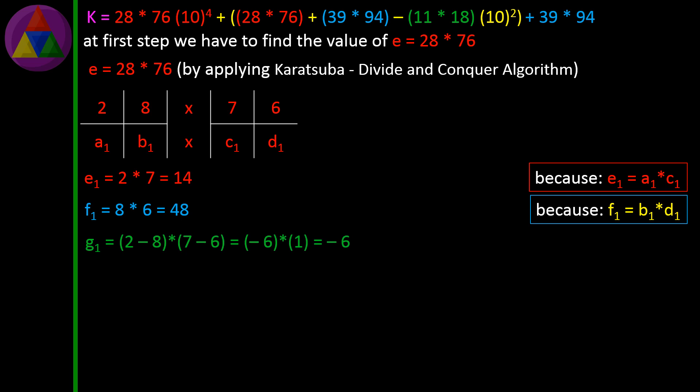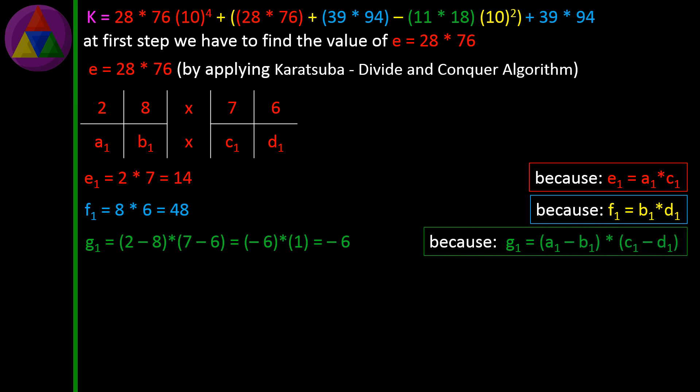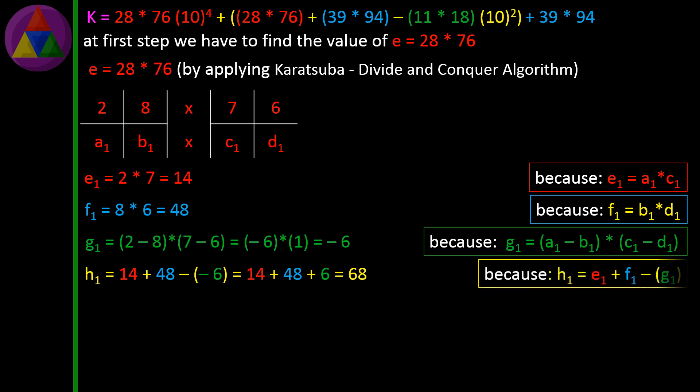G1 = (2−8) × (7−6) = (−6) × 1 = −6, because G1 = (A1−B1) × (C1−D1). H1 = 14 + 48 − (−6) = 14 + 48 + 6 = 68, because H1 = E1 + F1 − G1.